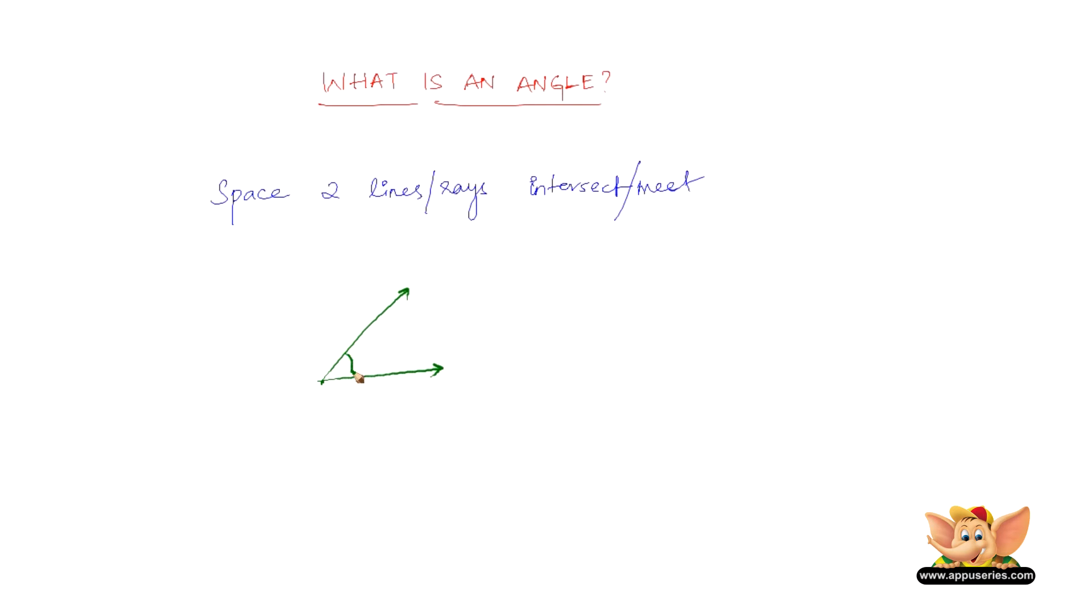The measurement of space, or the measurement of how much this line has rotated to here - how much this line has moved from here to here - that is called an angle.